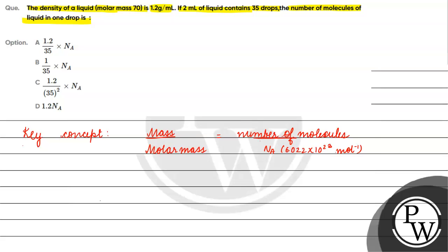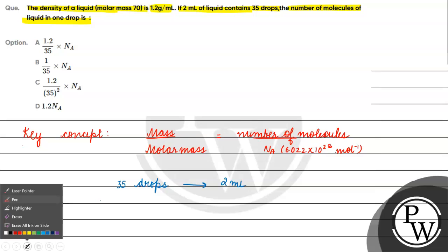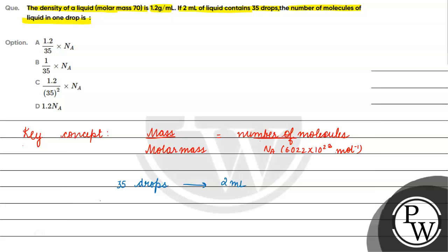What is given to us? We are given that 35 drops have a volume of 2 ml. So 1 drop has a volume of 2/35 ml.